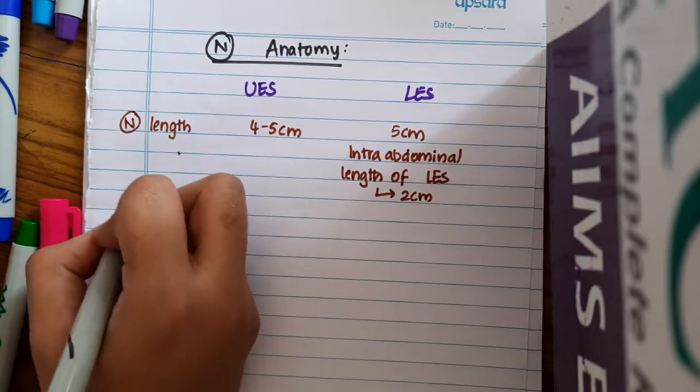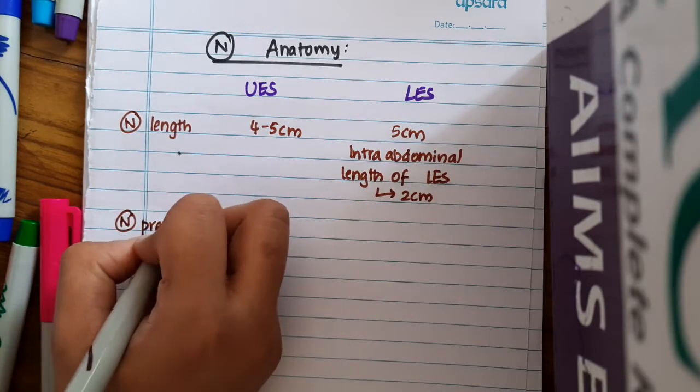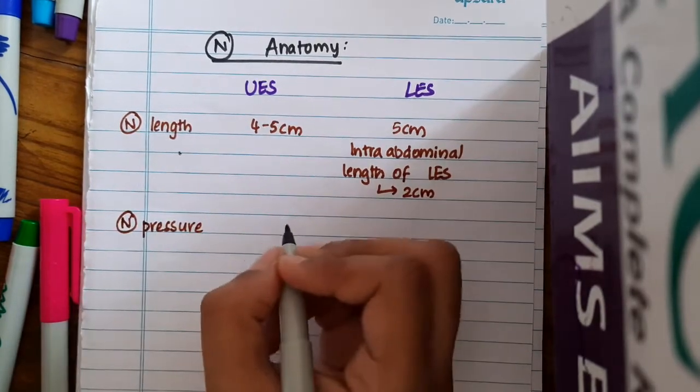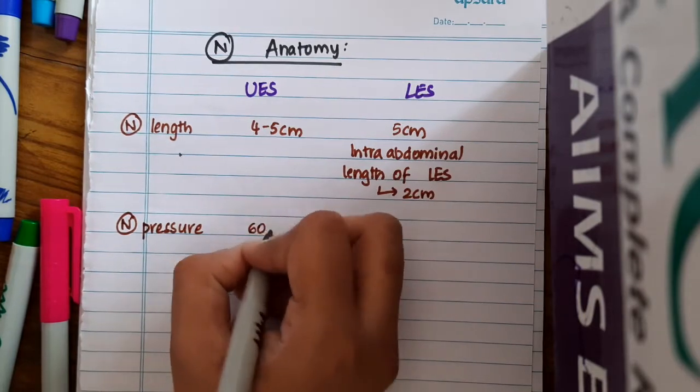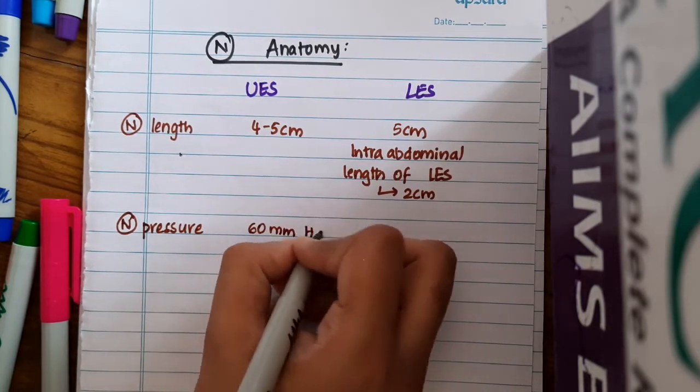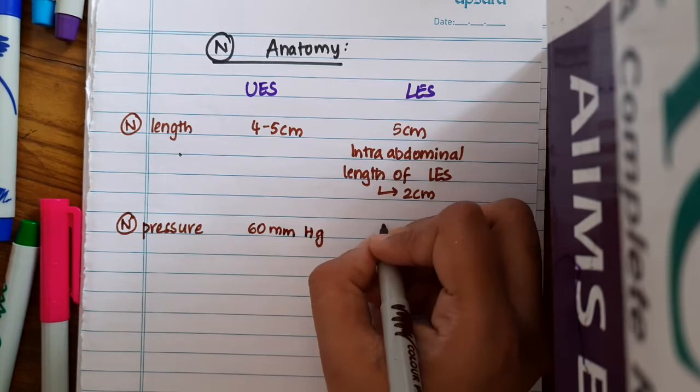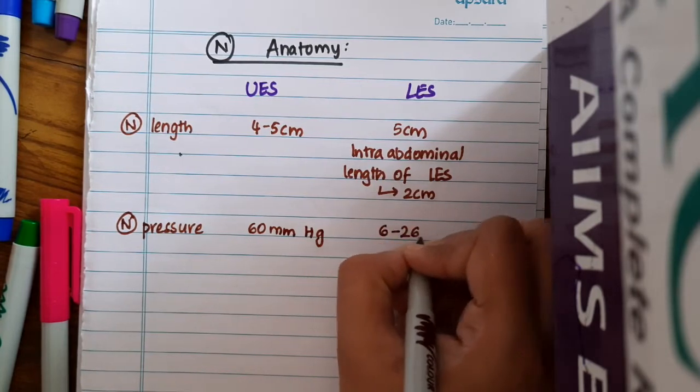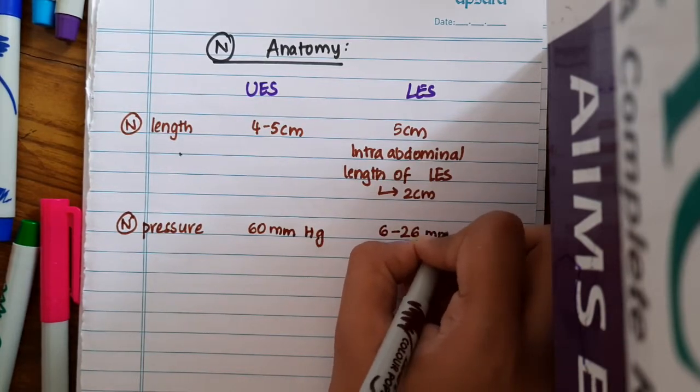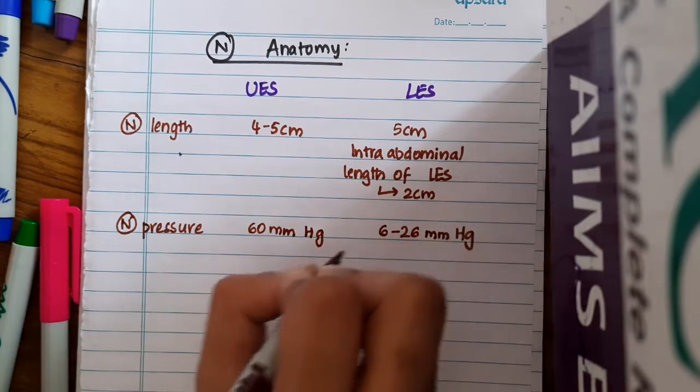Then if you were asked, the normal pressure of the upper esophageal sphincter is 60 mm of Hg. The normal pressure of lower esophageal sphincter is 6 to 22 mm of Hg.